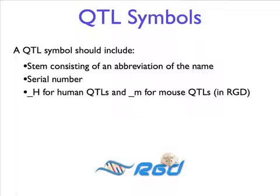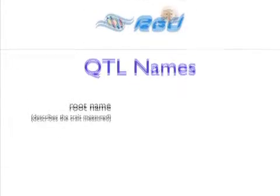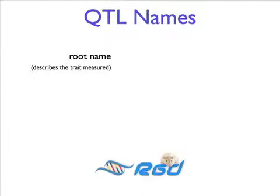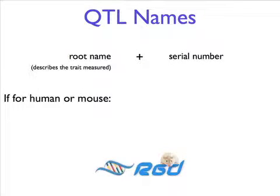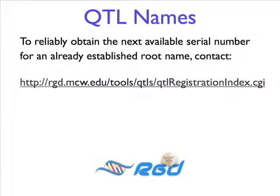To distinguish human or mouse QTLs from rat QTLs in RGD, we add underscore H to the symbols for human QTLs and underscore M to the symbol for mouse QTLs. A QTL name has a root name that describes the trait that is measured and a serial number. For human and mouse, this is followed by the word human or mouse in parentheses. The only way to reliably obtain the next available serial number for an already established root name is to contact the respective database — RGD for rat and human, and MGI for mouse.